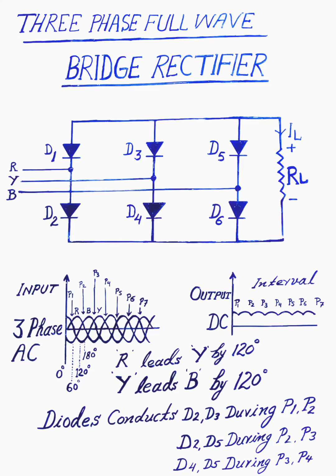During operation, diodes D2 and D3 conduct during period P1 to P2, diodes D2 and D5 conduct during period P2 to P3, and diodes D4 and D5 conduct during period P3 to P4. Similarly, diodes D1 and D4, D6 and D1, and D3 and D6 conduct, and we get a full wave DC output. Thank you.